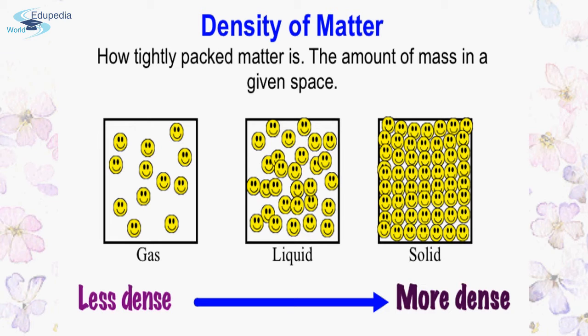Density also depends on the mass of the atom and the size of each atom. From this picture we can conclude that solids have the highest density, then liquids, and gases have the lowest density. The amount of mass in a given space depends upon the density of the matter.